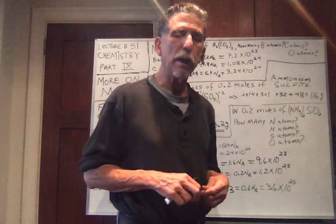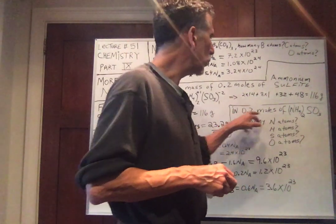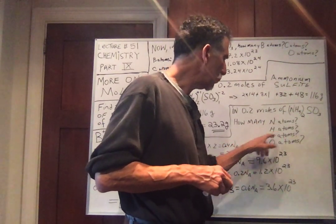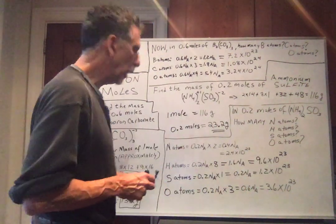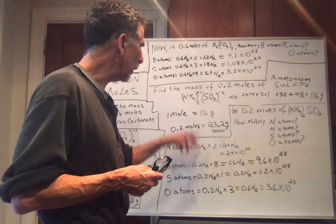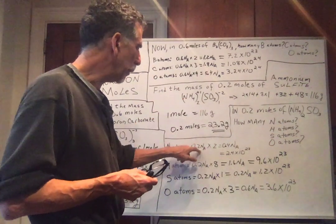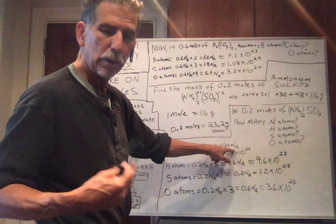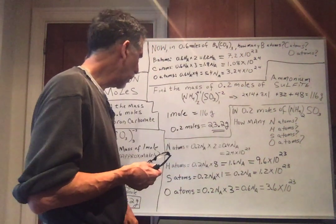And then we'll play the same game with how many atoms of each element are there. So in 0.2 moles of ammonium sulfite, how many N atoms? How many H atoms? How many S atoms? How many O atoms? Same question. Getting redundant. So N atoms. We have 0.2 NA, because we have 0.2 moles, times we had 2 nitrogens. So we multiply by 2, we get 0.4 NA. And again, NA is 6 times 10 to the 23rd. We put that in, we get 2.4 times 10 to the 23rd.